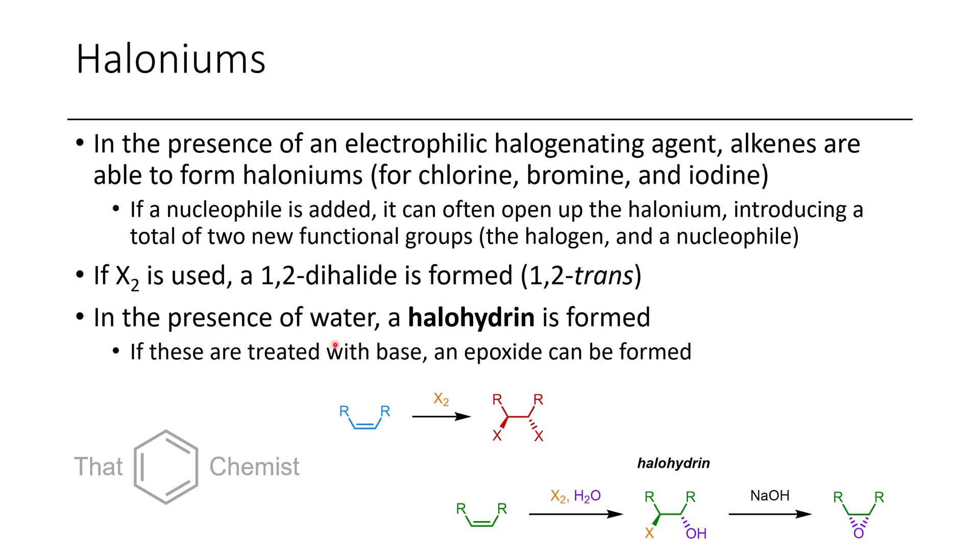If you do this reaction in the presence of water, you'll form what's called a halohydrin, and that's because water can act as the nucleophile opening up the halonium. It's also worth noting that if you treat this halohydrin with a base, it's possible to form an epoxide. So in addition to the MCPBA-mediated epoxidation of alkenes, you could use this as a way to make epoxides as well.